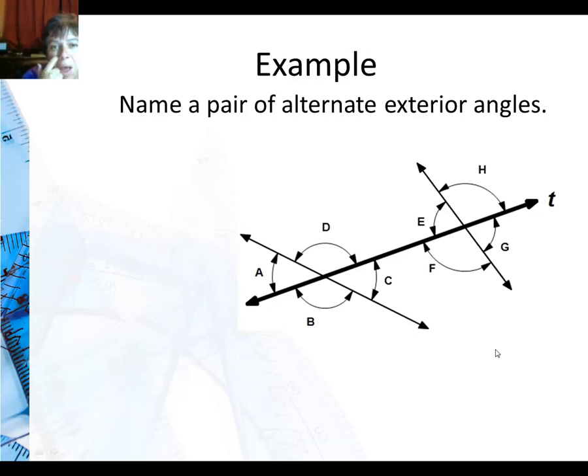In this example, I need to name a pair of alternate exterior angles. I want to go outside. I'm going to start on the left, so it's going to be either angle A or B. I'll just go with angle A above the transversal.